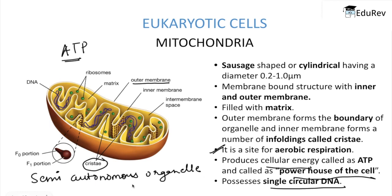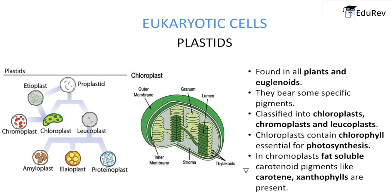Now let us begin with one of the most important organelles of a plant — plastids. Plastids are found in all plants and euglenoids and they bear specific pigments which impart specific colors. These pigments present inside the plastids are chloroplast, chromoplast, and leucoplast.